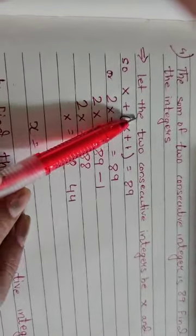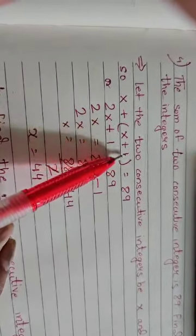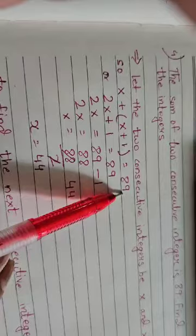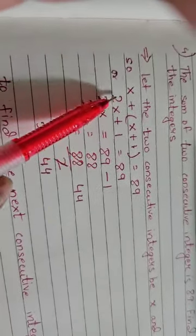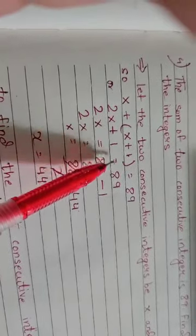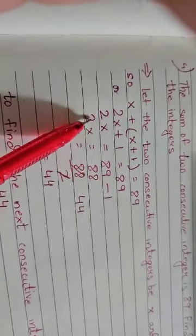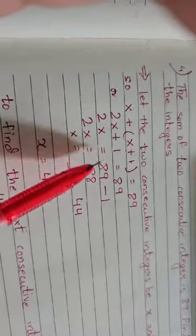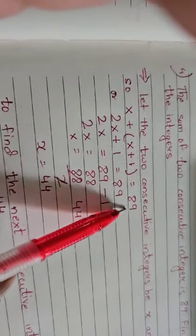x plus, in brackets, x plus 1, equals 89. Now we simplify it: x plus x is 2x, plus 1 equals 89. 2x equals... you take 1 to the right